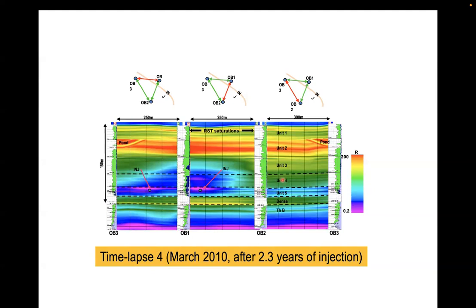These survey results were very meaningful for the operators. They showed that water flow inside the reservoir is very uneven, even within Unit 5. In particular, in the OB1–OB2 section there appears to be anisotropy in the water flooding — water refused to go to the right of the injector, staying on the left and breaking into Unit 4. And the OB2–OB3 section indicated very slow water movement. All this information is crucial for designing a new water injection pattern, and it's information that simply cannot be obtained from conventional logging data alone, which only tells you what's in the borehole, not between wells.